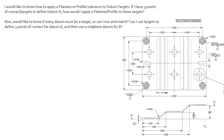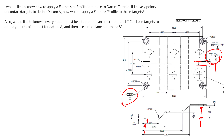For the last part of the question: can I use targets to define three points of contact for datum A and then use a midplane for datum B? Absolutely — you can mix and match all sorts of datum information on a drawing. You could use datum target points or the datum target symbol for datum A, then identify datum B as a midplane in the traditional way, qualified back to datum A. Even when using datum targets, you still have a datum A. The answer is: yes, you can absolutely mix datum targets and traditional datums however you like.